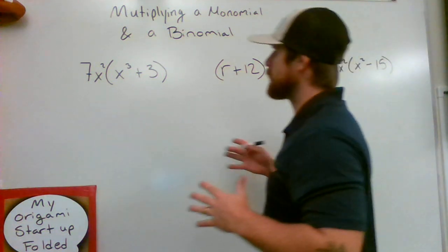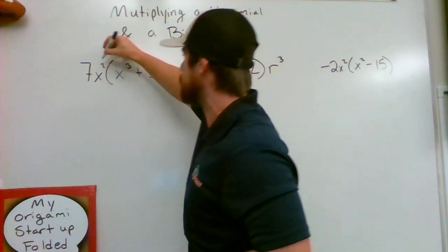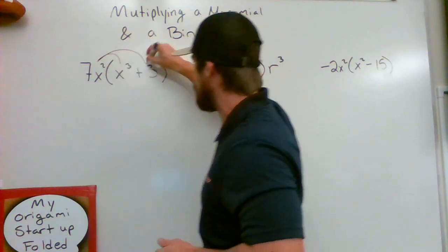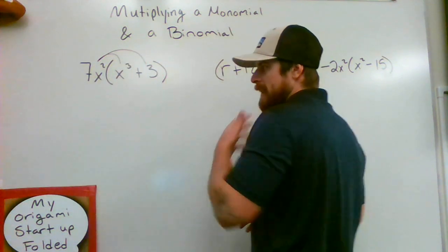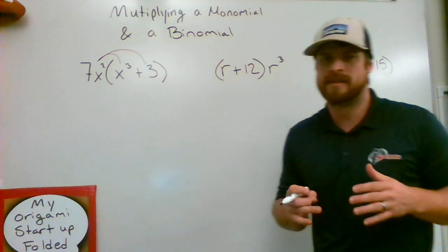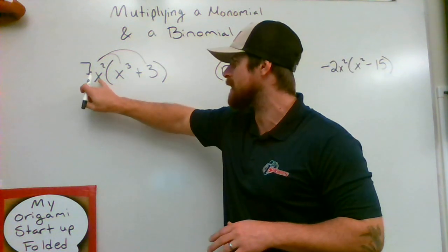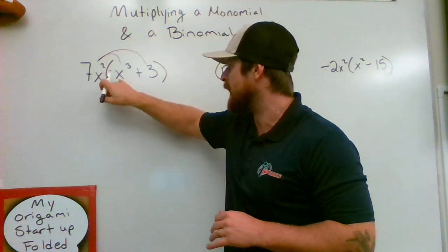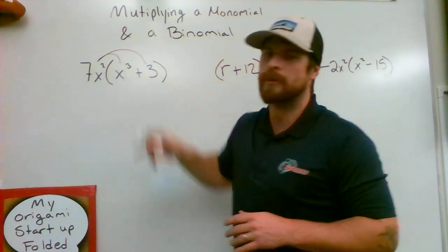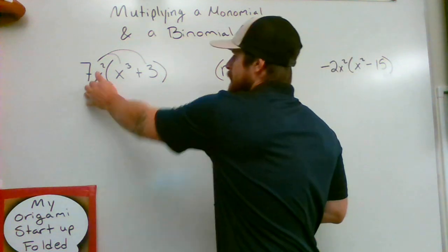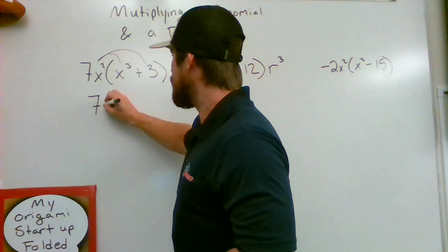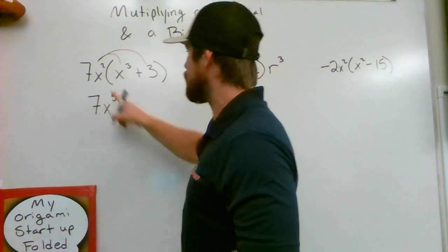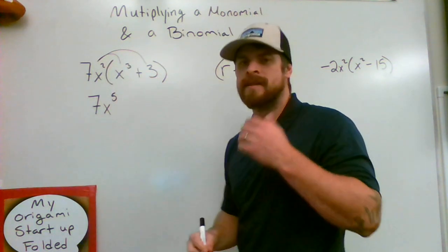Alright, so the first thing we need to do is realize that means we're going to be needing to use the distributive property. So we're saying 7x² times x³. Now, the product rule of exponents tells us that when we're multiplying bases that are the same, an x and an x, we need to add the 2 and the 3 together. So 7x² times x³ is going to come out as 7x⁵ because 2 plus 3 makes 5.